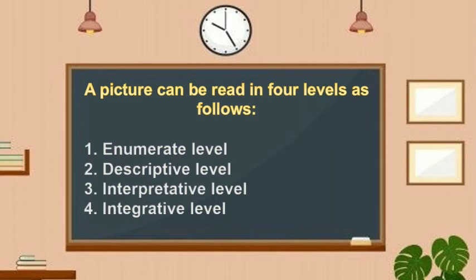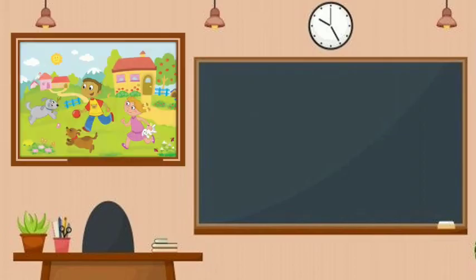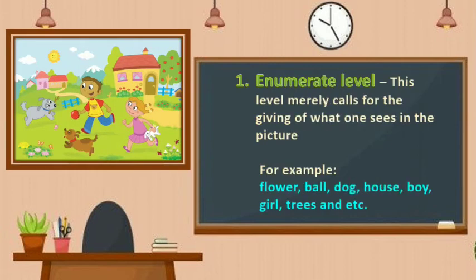Enumerate level: this level merely calls for the giving of what one sees in the picture. For example, flower, ball, dog, house, boy, girl, trees, and so on — those are the things that we can see in the picture.